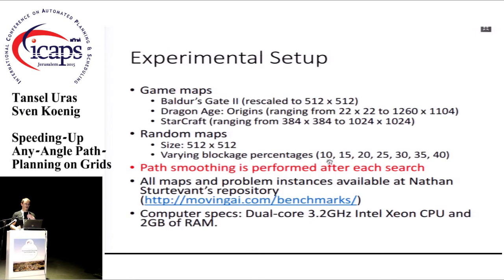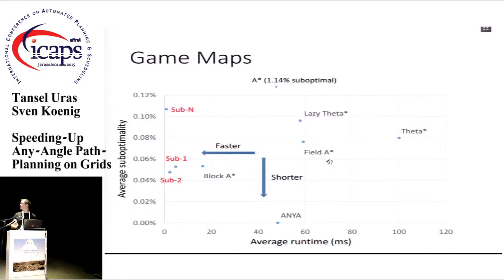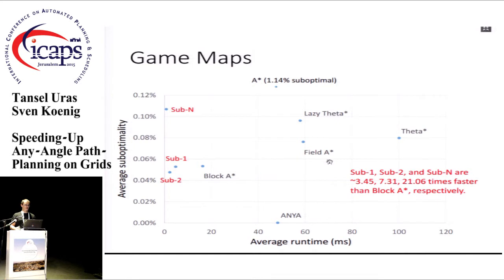For experimental results, we have results on game maps and random maps from Nathan Sturtevant's repository. We perform path smoothing after the searches of all any-angle algorithms, as it is fast and often makes paths slightly shorter. On game maps, the figure compares algorithms where left means faster and down means shorter paths. Two-level sub-goal graphs and ANYA dominate all other algorithms except n-level sub-goal graphs in the average path length and runtime trade-off.